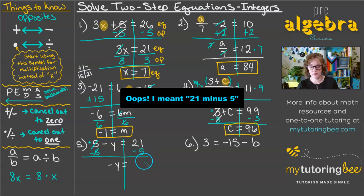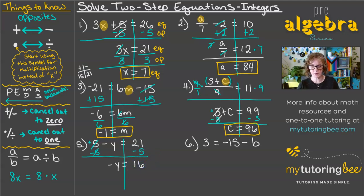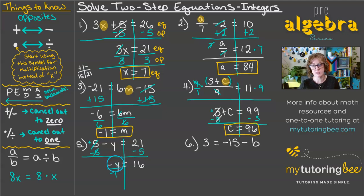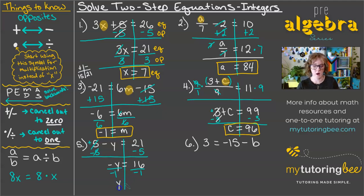Subtracting 5 cancels out that 5, and the negative stays with our y as we bring it down — so now we've got negative y equals 16. Here's where our second step comes in: we need to get rid of this negative. We want a positive variable on one side, so we divide by negative 1. When we don't see a number in front of a variable, it's an assumed 1, and with a negative sign it's an assumed negative 1. Negative divided by negative cancels out, giving us positive y, and 16 divided by negative 1 gives us negative 16.